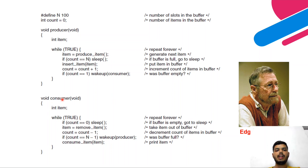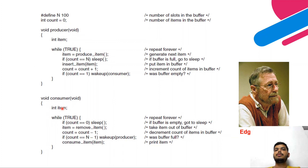The consumer cannot consume items continuously — it needs some time after removing an item to actually consume it. So it waits, consumes, and then loops back again. That is how both processes work together, and this is the solution to the producer-consumer problem.